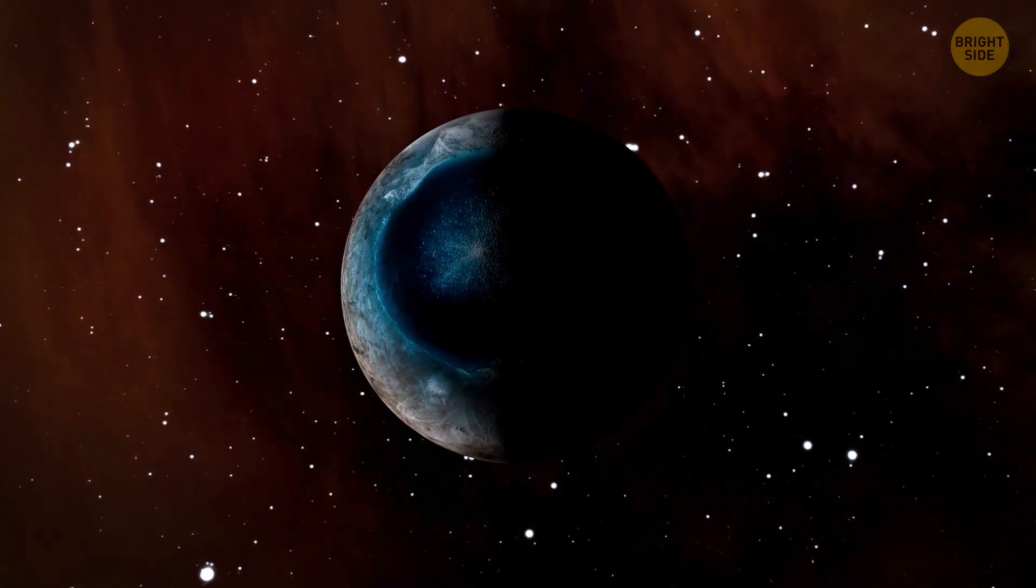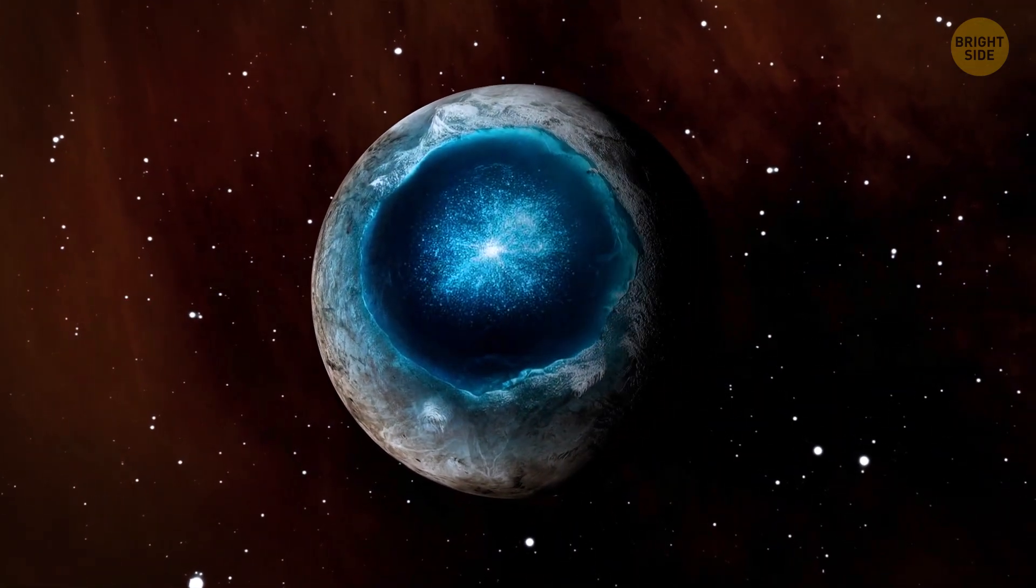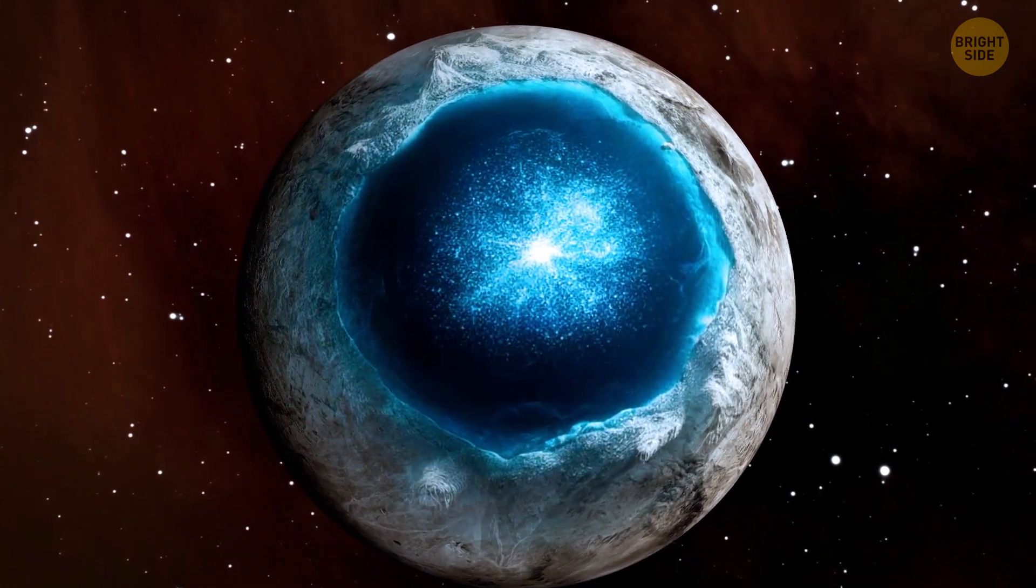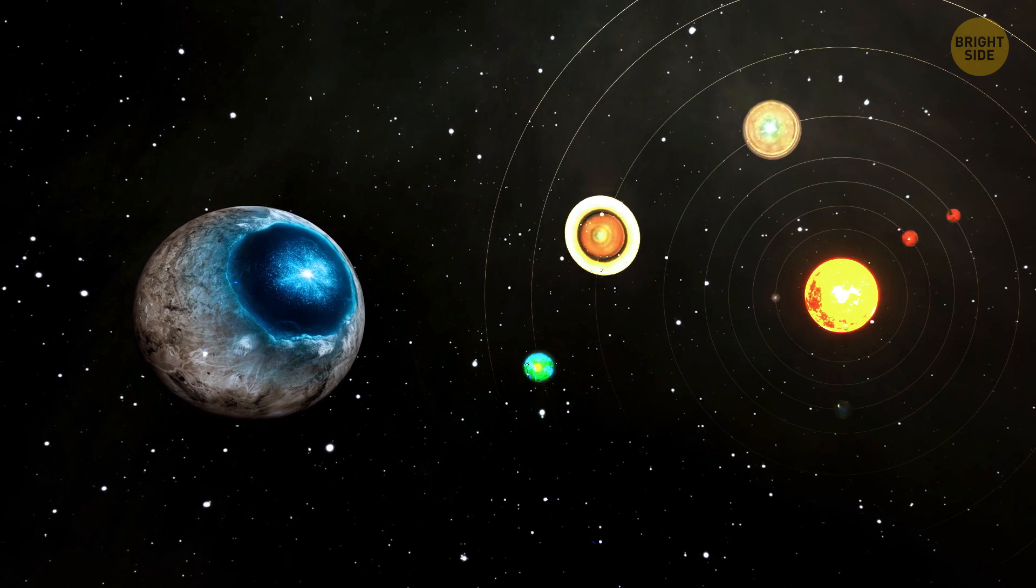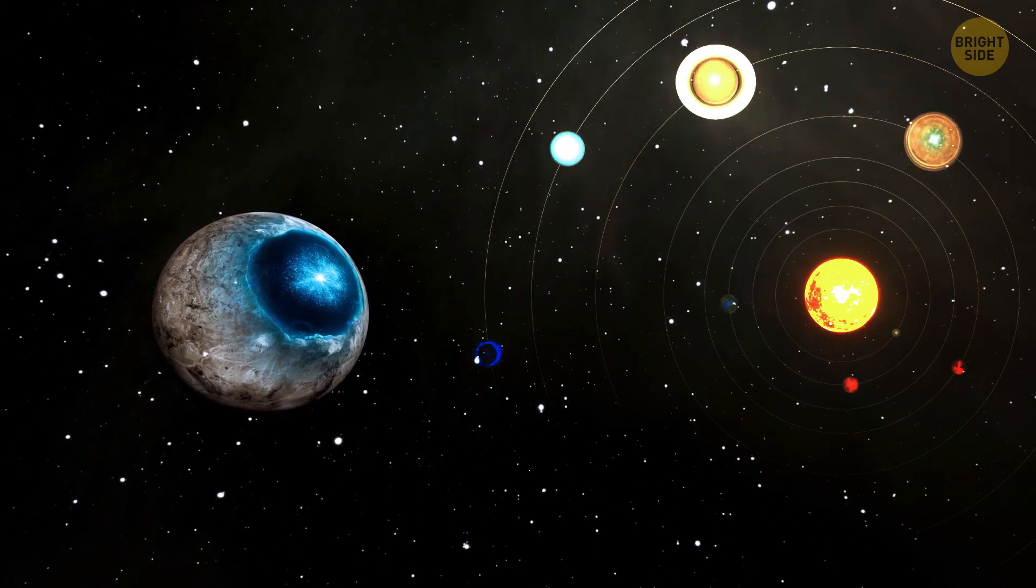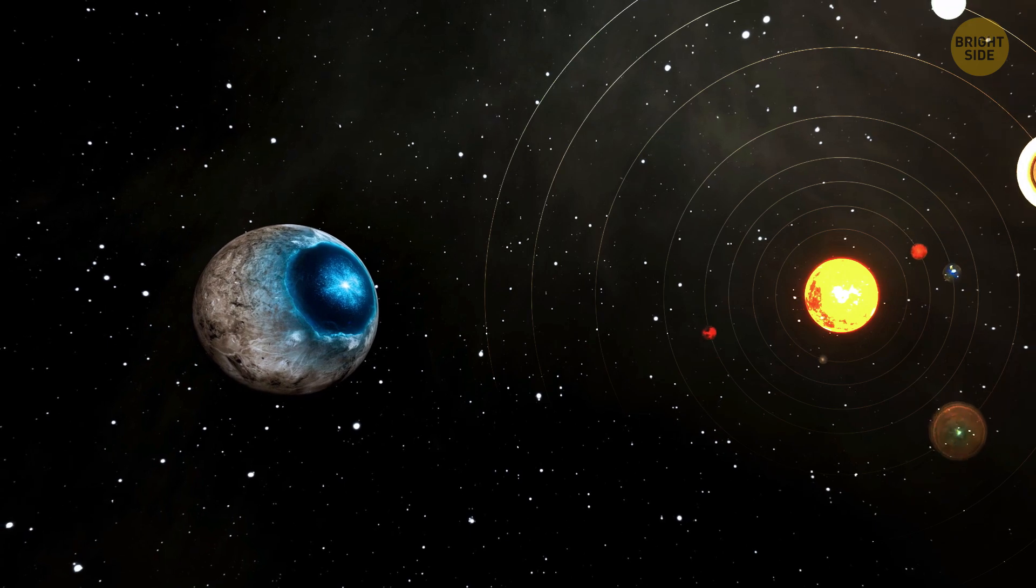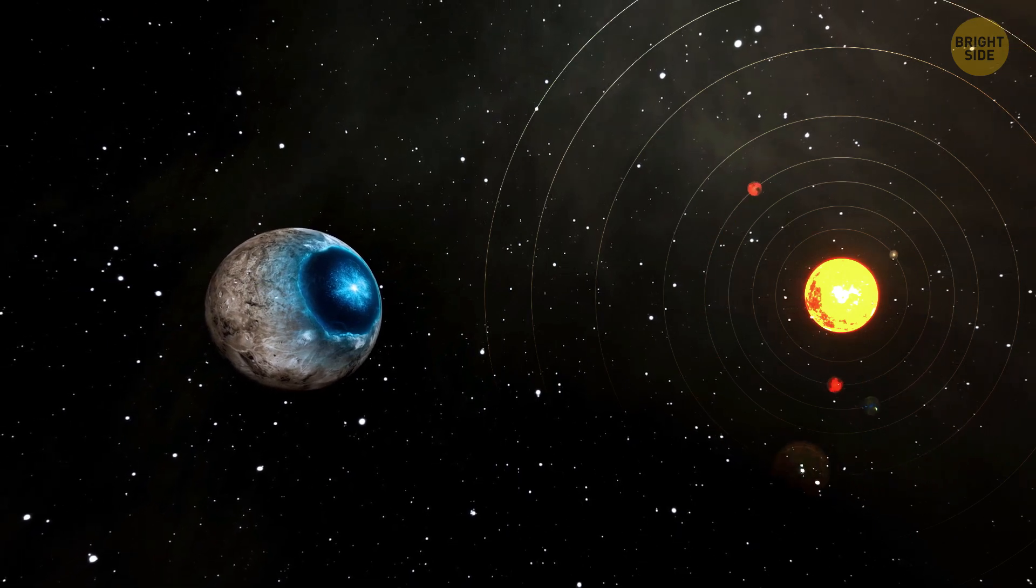Now look at this marvelous exoplanet. It resembles a giant eyeball hanging out there in space. But it isn't the coolest thing about it. This distant world, identified in 2017, is one of the most promising places for finding life outside our solar system.